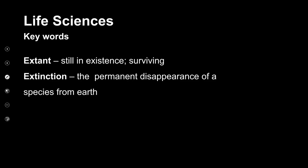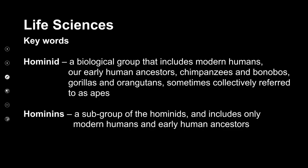The next keyword is extant. When we're looking at descendants and organisms that have descended from others, we want to see if they are still in existence. For example, the human Homo sapiens is extant because we are still in existence. The opposite term is extinction — this is where organisms have permanently disappeared from the earth. Those are species that are no longer in existence; they lived in the past, and the way we learn about them is from evidence, such as fossil remains.